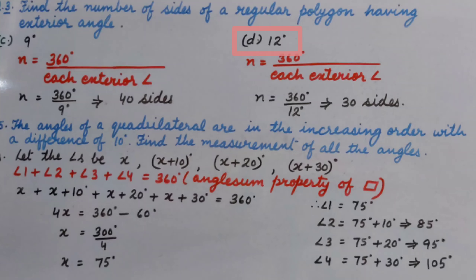Similarly, Part D: each exterior angle is 12 degrees. So the number of sides is 30.